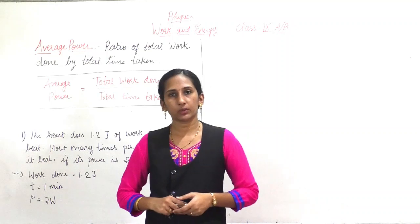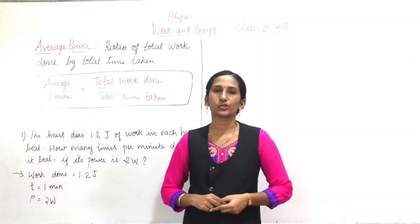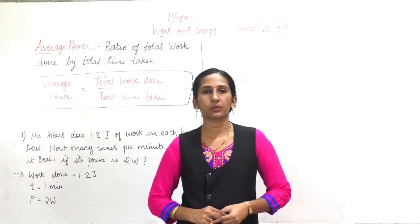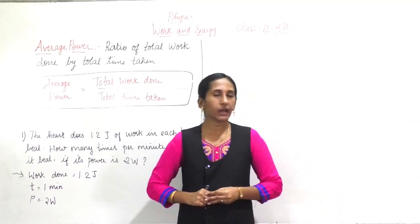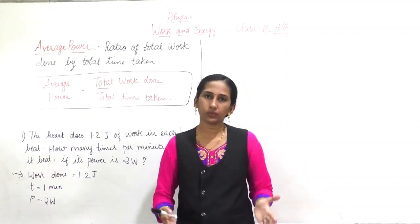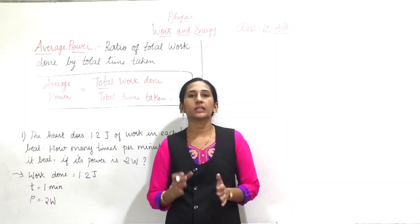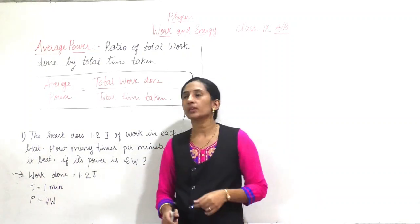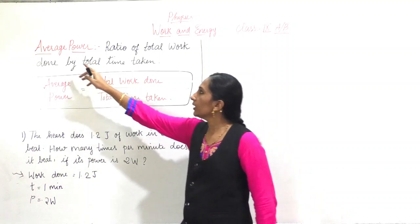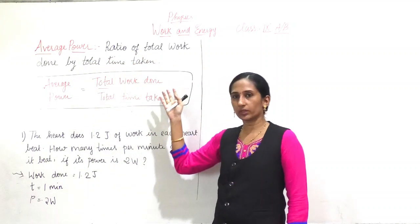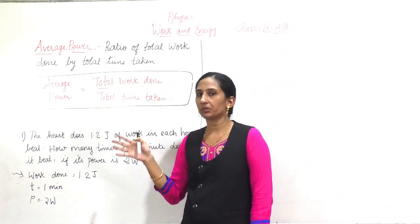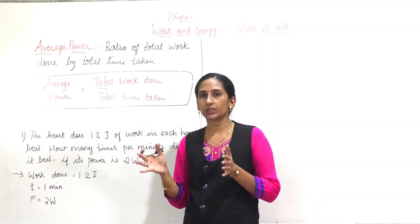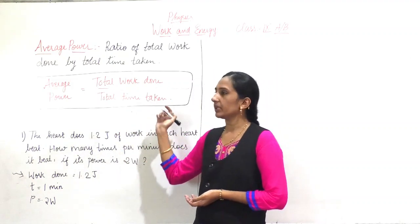So what is power? Power is the ratio of work done per unit time. And what is average power? Average power means it will be total work done divided by total time taken — it is called average power. In power it was just work done divided by time, but average power is the total work done divided by total time taken.